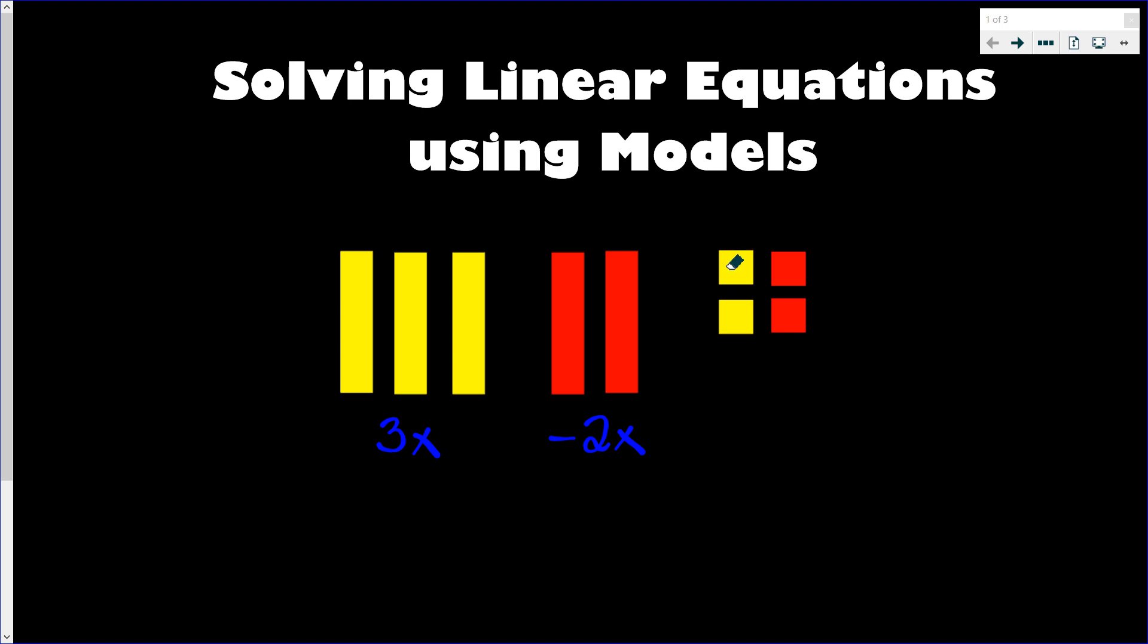And these little squares are called ones tiles. Maybe I should label this guy. This one's called an x tile and these are called ones tiles. The positive will represent just plus one, so we have two of them, so that will be plus two. And then the red one are negative, so that's negative two.